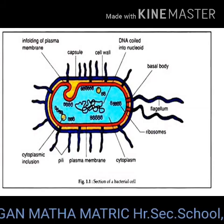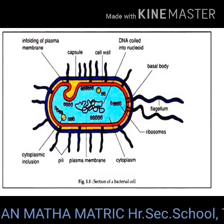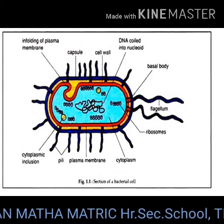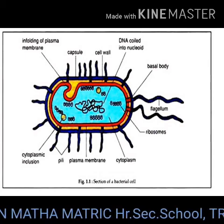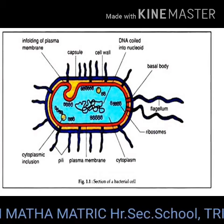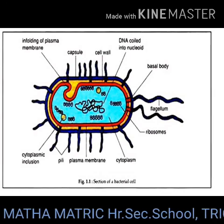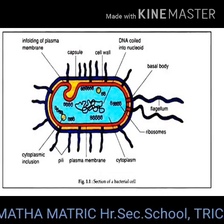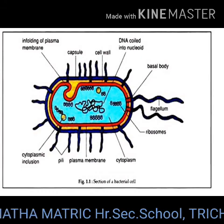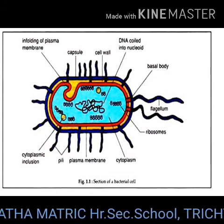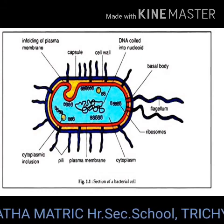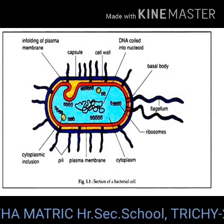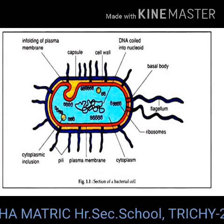Flagella: certain motile bacteria have numerous thin hair-like projections of variable length. The flagella of eukaryotic cells contain 9+2 microtubules, that is 9 peripheral and 2 central microtubules, but each flagellum in bacteria is made up of a single fibril. Flagella are used for locomotion. Based on the number and position of flagella, there are different types of bacteria.